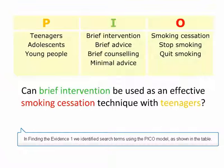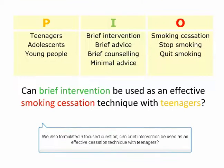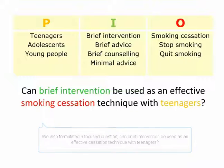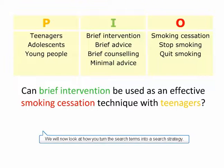In Finding the Evidence 1, we identified search terms using the PICO model, as shown in the table. We also formulated a focus question: Can brief intervention be used as an effective cessation technique with teenagers? We will now look at how you turn the search terms into a search strategy.